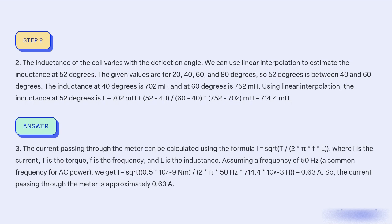3. The current passing through the meter can be calculated using the formula I = √(T/(2π × F × L)), where I is the current, T is the torque, F is the frequency, and L is the inductance.